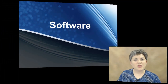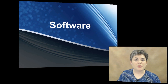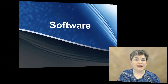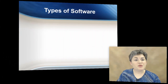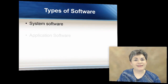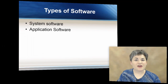In this lesson, we're going to talk about computer software. Computers need software to operate. Without software, a computer is simply a big paperweight or doorstop. There are two main types of software: system software and application software.